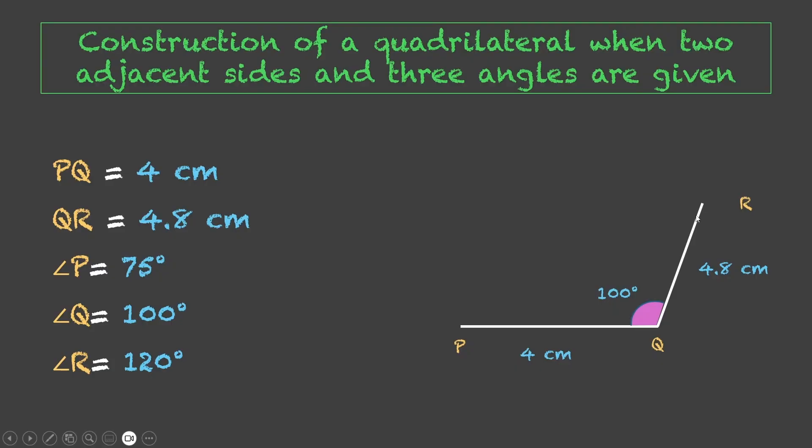Next we know the measurement of angle R which is 120 degrees, so we make an angle over here. Similarly, since we have angle P equal to 75 degrees, we construct this angle over here like this. And wherever these two intersect, that point will be our point S.